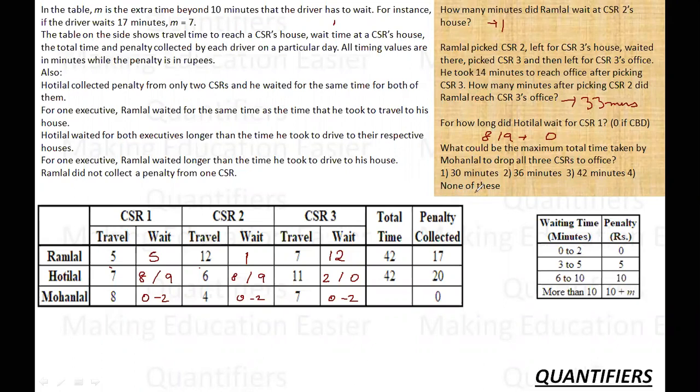What could be the maximum total time taken by Mohanlal to drop all 3 CSRs? So Mohanlal maximum time is 4, 12 and 7, 19 is the travel time. Plus to maximize, I will take 2 plus 2 plus 2. That is 25 minutes. So it is option number D, none of these. 25 minutes is the required time.